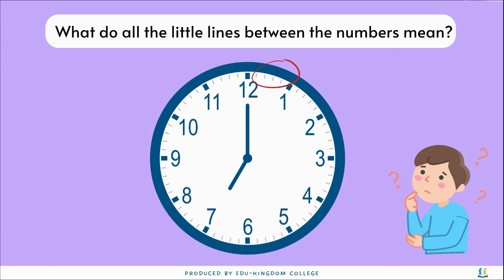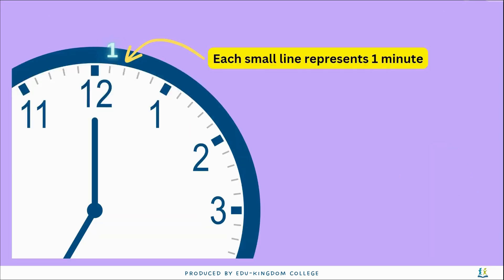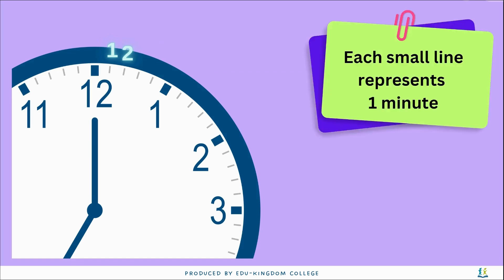Besides the hands and numbers, there are also little lines between the numbers. But what are they? Each small line actually represents 1 minute — 1, 2, 3, 4, 5, 6, 7, 8, 9, 10, and so on.